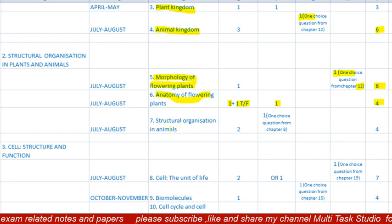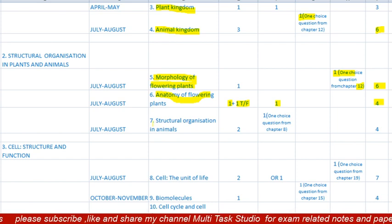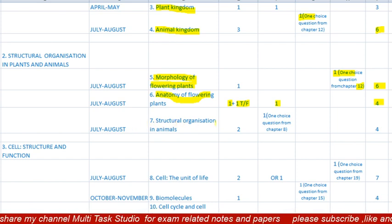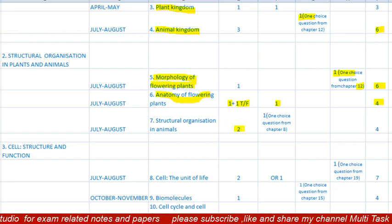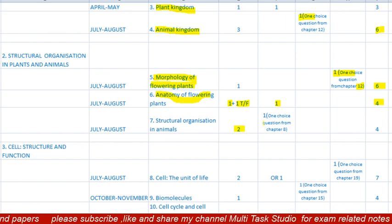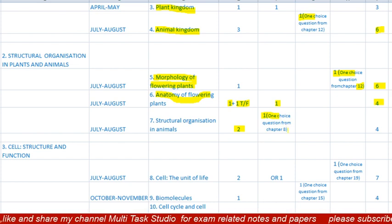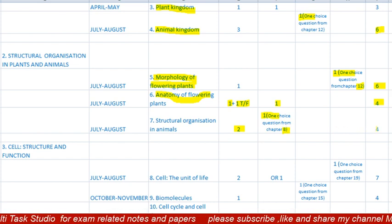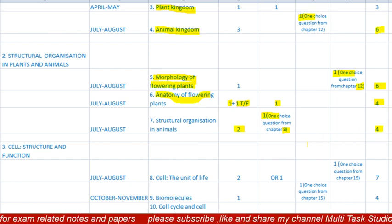The seventh lesson is 'Structural Organization in Animals,' to be completed in July/August. There are two one-mark questions: one MCQ and one fill in the blank, and one question of two marks. There will be a choice from chapter eight. Total paper will be four marks.